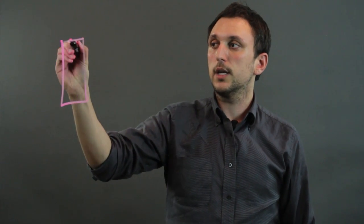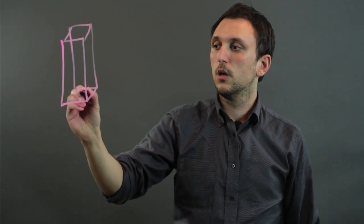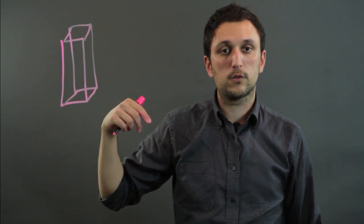Now a square prism is a three-dimensional solid that has two square bases. For example, like this. So this base here is a square and this base up here is a square.